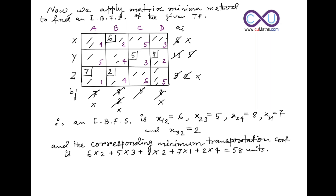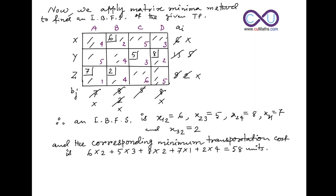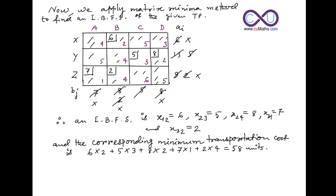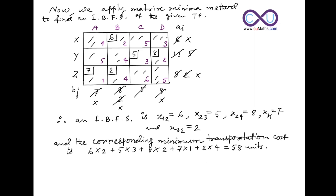We also find the minimum transportation cost by multiplying each allocation cell by its corresponding cost: 6 times 2, plus 5 times 3, plus 8 times 2, plus 7 times 1, plus 2 times 4, which equals 58 units. This is the minimum transportation cost corresponding to this IBFS. In the description section you will find a link for practice exercises to check your progress.